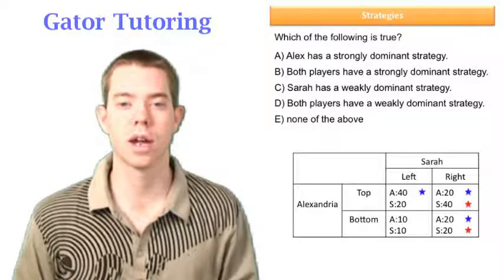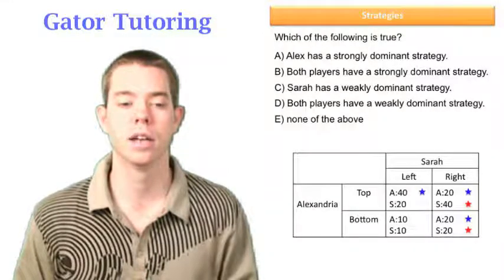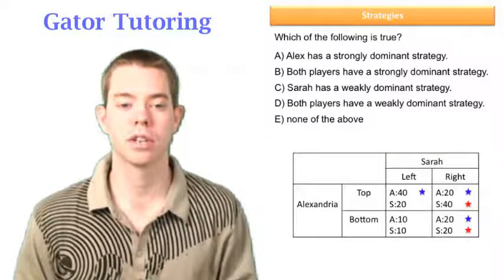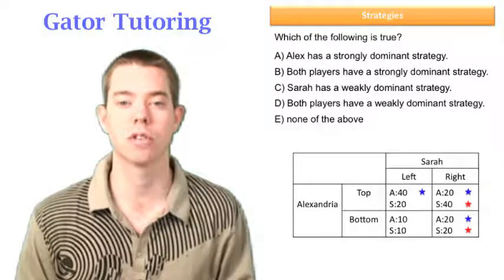Alex has a strongly dominant strategy. Well, we look at Alex, and if she plays top, she could either get 40 or 20. If she plays bottom, she could either get 10 or 20.